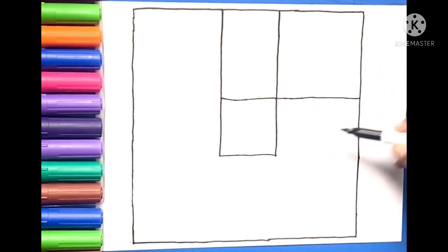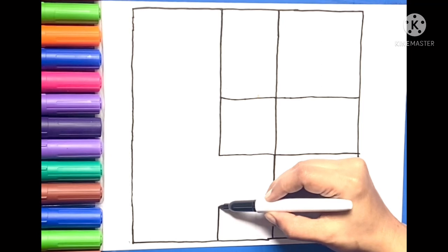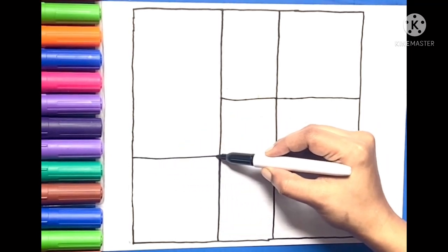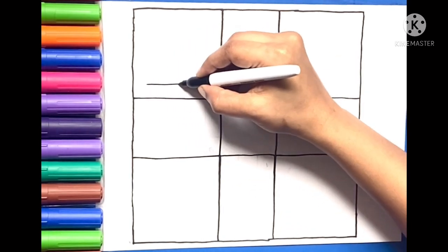Now draw another two straight parallel standing lines from bottom side of the square. Draw two sleeping lines parallel on left side of the square. Now you can see square boxes on all the four sides of the big square.